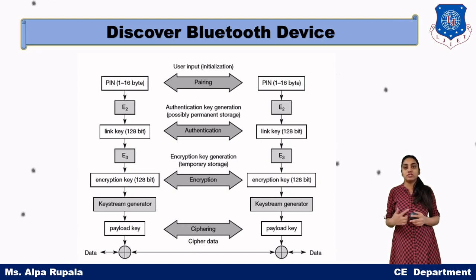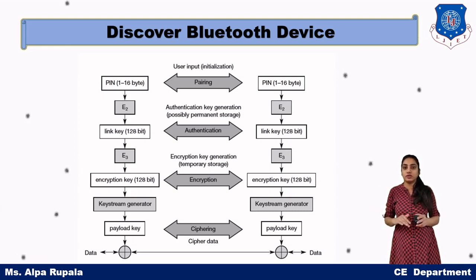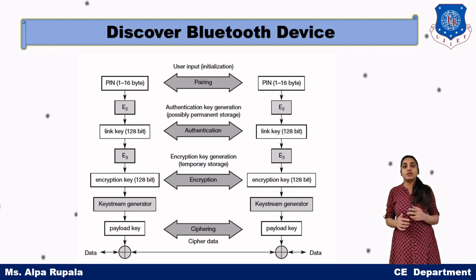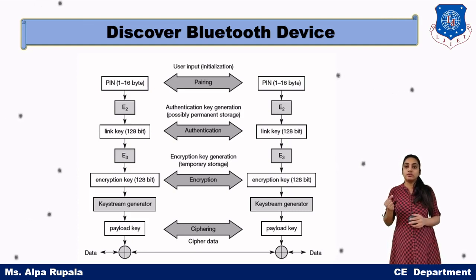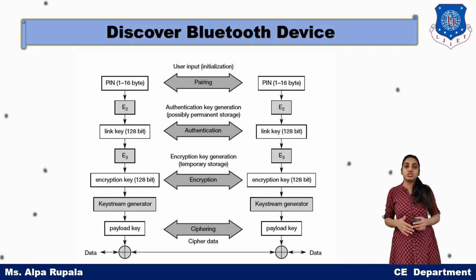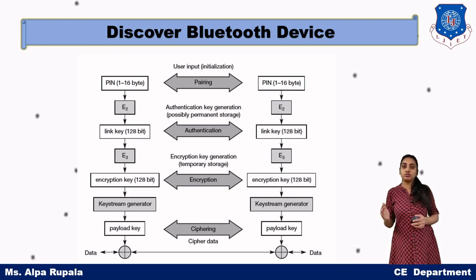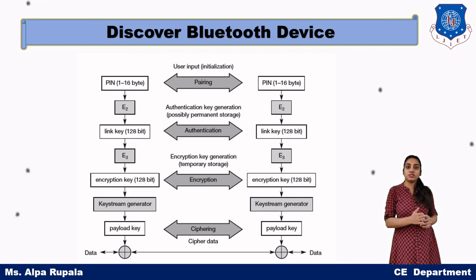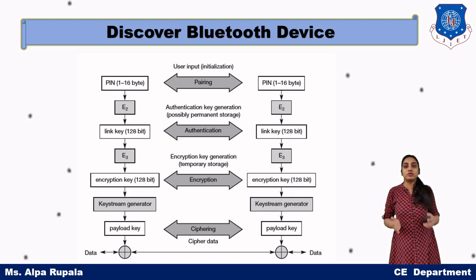If both devices have previously communicated with each other, then pairing is not required because they are already paired. But if the devices are communicating for the first time, pairing is very important as the first step. To pair two Bluetooth devices, there will be one PIN of 1 to 16 bytes, and that PIN will be common to both devices. In previous years when Bluetooth security was not as strong, the PIN was fixed as four zeros. Nowadays we can change our PIN. Whatever PIN the master sends, the other device must be paired with the same PIN — for example, if I set PIN 1234 on mobile 1, then mobile 2 must also have PIN 1234 for the two devices to be paired.